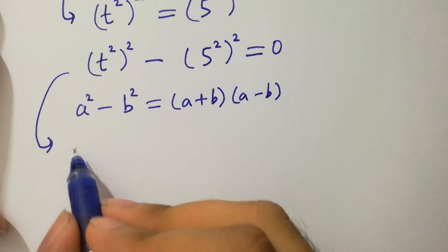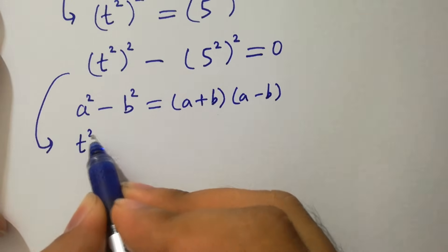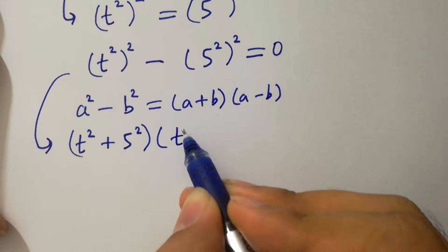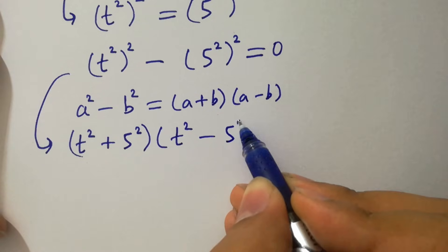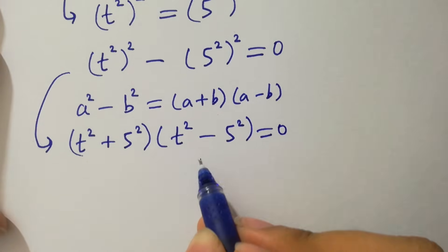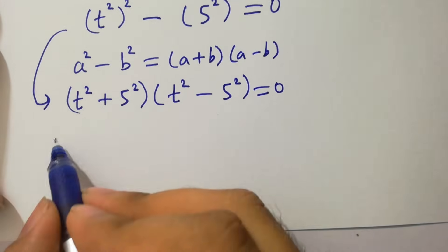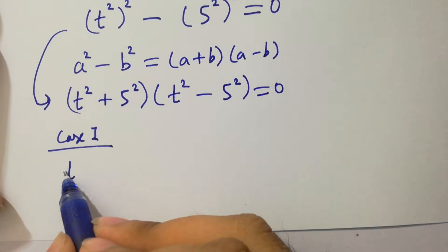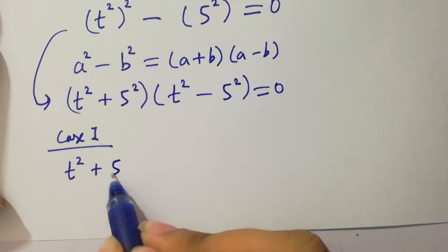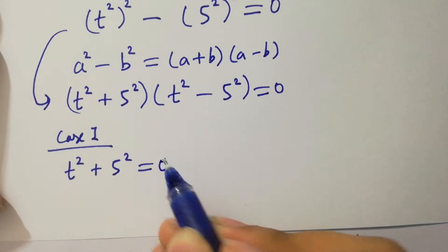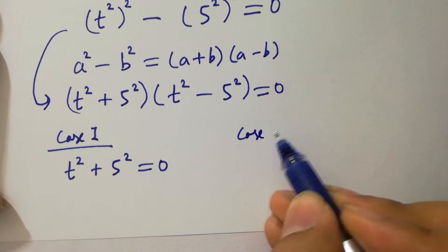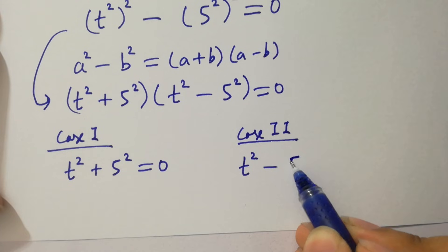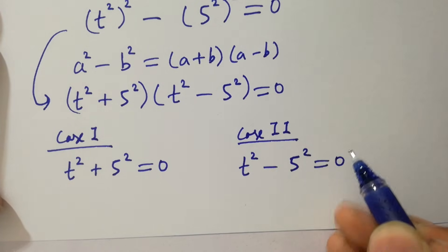Apply it. We have (t² + 5²)(t² - 5²) equals 0. So we have two cases here. Case 1 is t² + 5² equals 0.